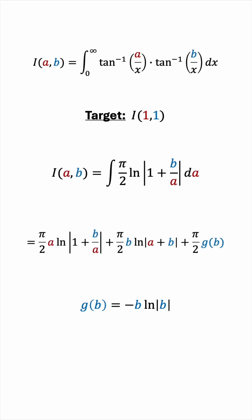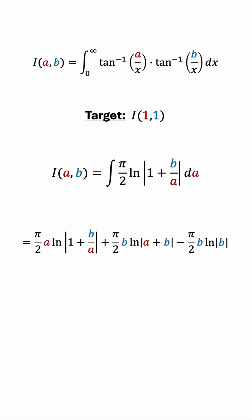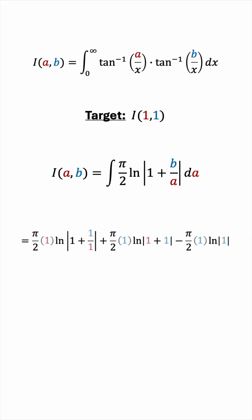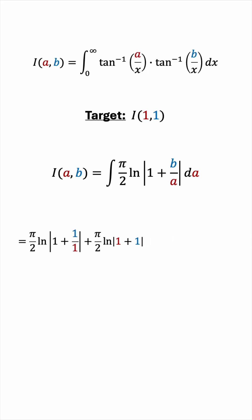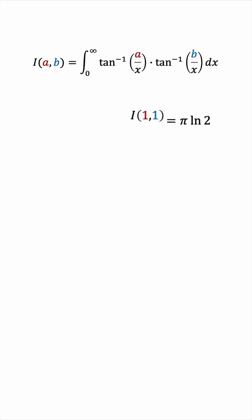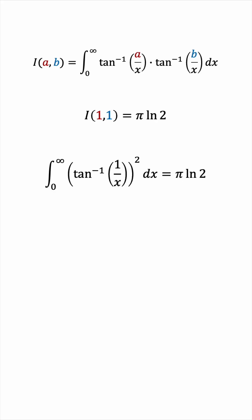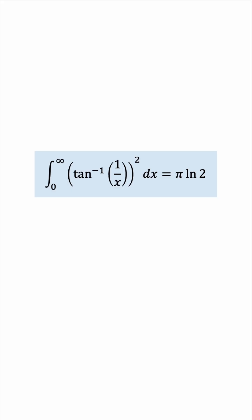Finally, we have an expression for I in terms of a and b, and we're ready to substitute a = 1 and b = 1 to arrive at the answer for our original difficult integral. Substituting a = 1 and b = 1, we get π/2 times ln(2) plus π/2 times ln(2), which equals π times ln(2). So I(1, 1) equals π times ln(2), meaning the integral from 0 to infinity of the square of arctan(1/x) dx equals π·ln(2). And finally, we're done.